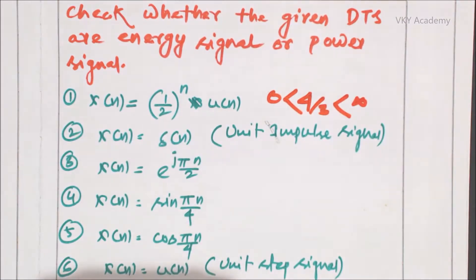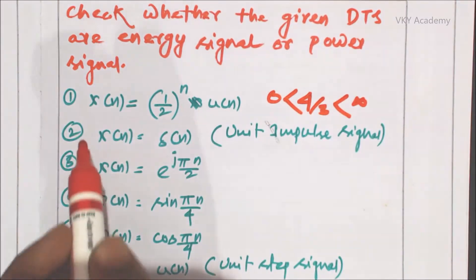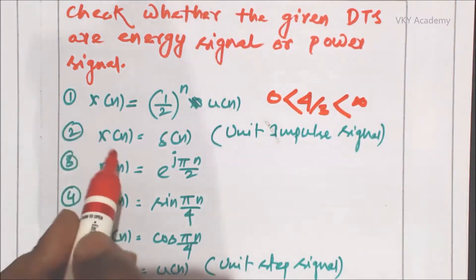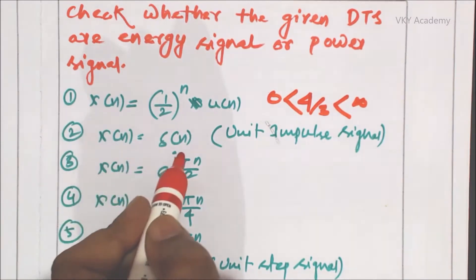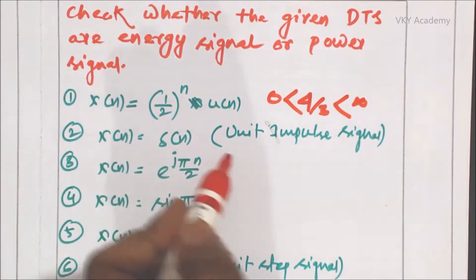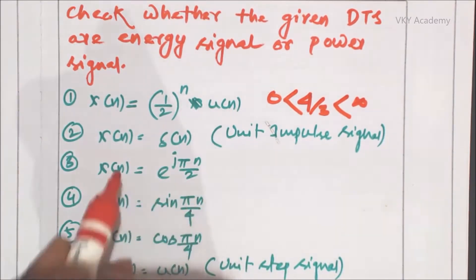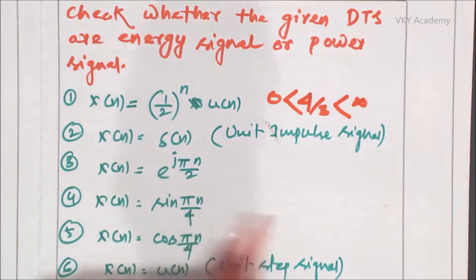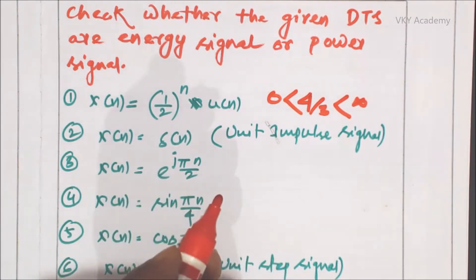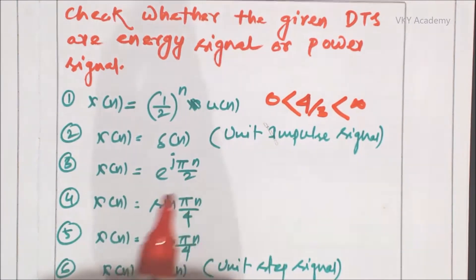In this particular lecture we will solve the second numerical: x(n) = δ(n), which is a unit impulse signal, and we will check whether this particular signal is an energy signal or a power signal.